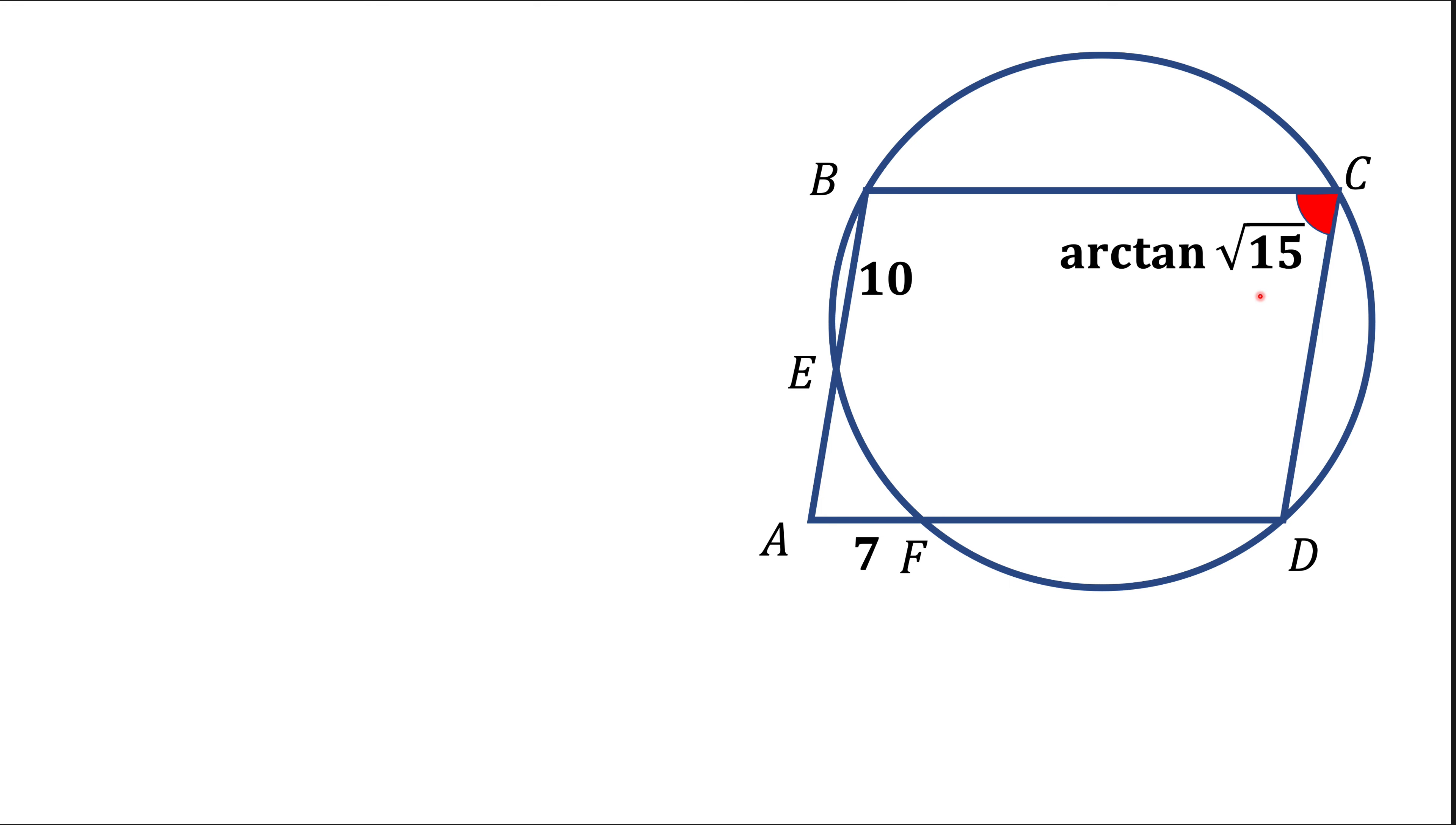Before we go ahead and solve this problem, let's first think what kind of tools we likely need to solve this problem. First of all, we see that the angle is given as arctangent, so probably we need to know what arctangent is, or more generally, we need to know something about trigonometry. We need arctangent, probably need tangent, maybe sine, cosine, maybe a relationship between those functions. The other thing we see is that we know some lengths and some angles, so maybe we need to know some relationship that combine those things together. And there are a couple of things we know in geometry - one is called law of cosines, the other called law of sines. We may need them, we may not need them.